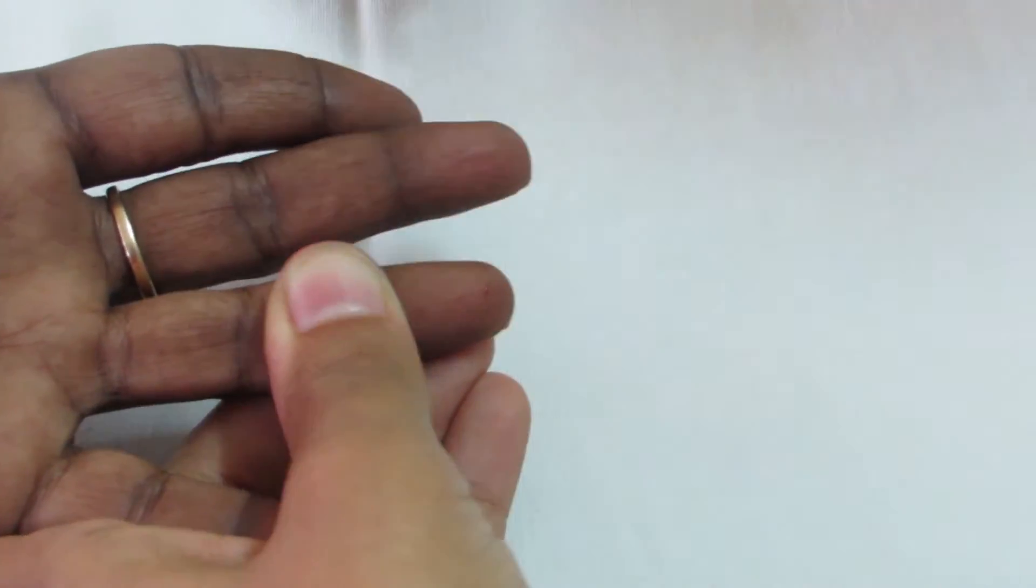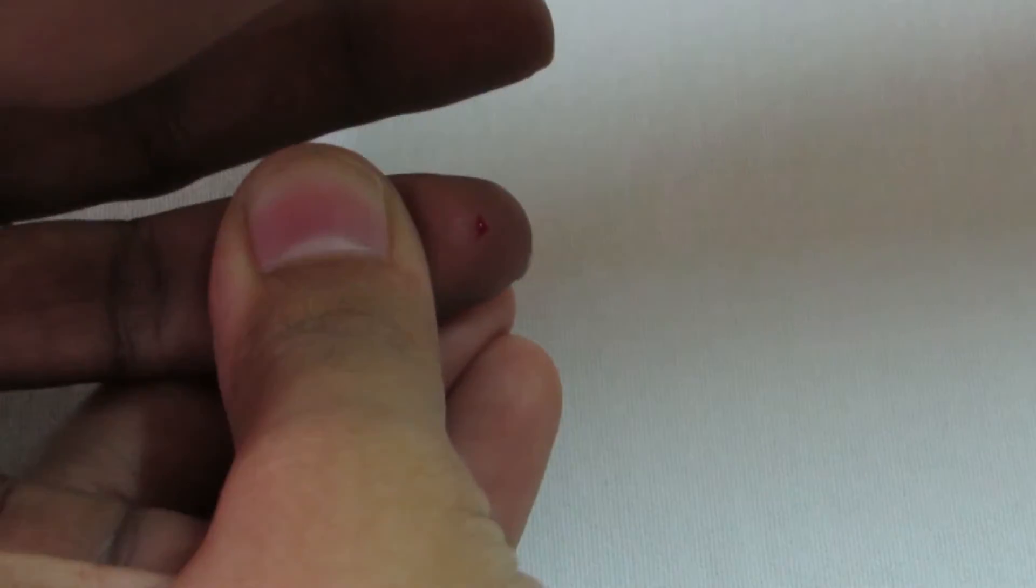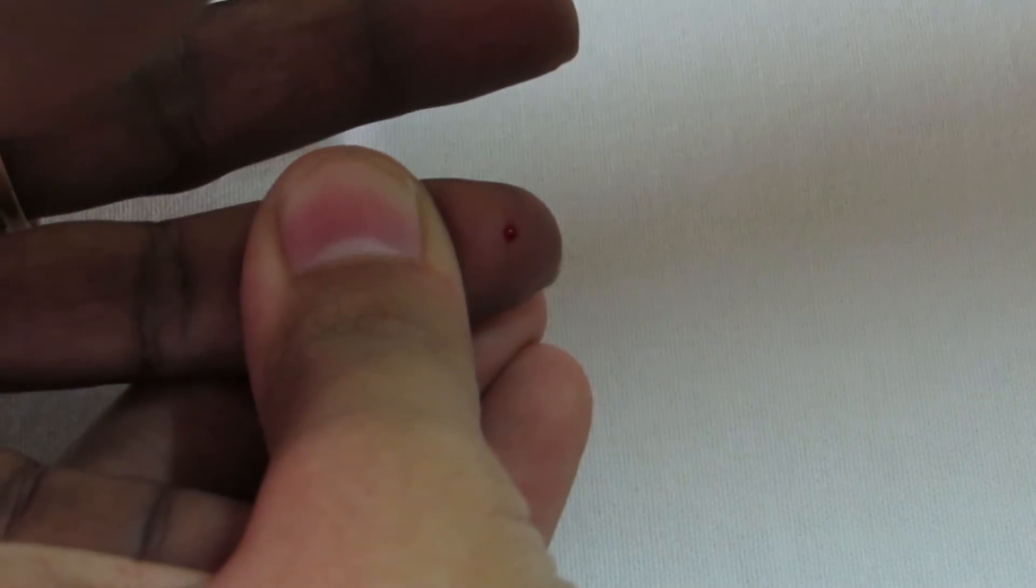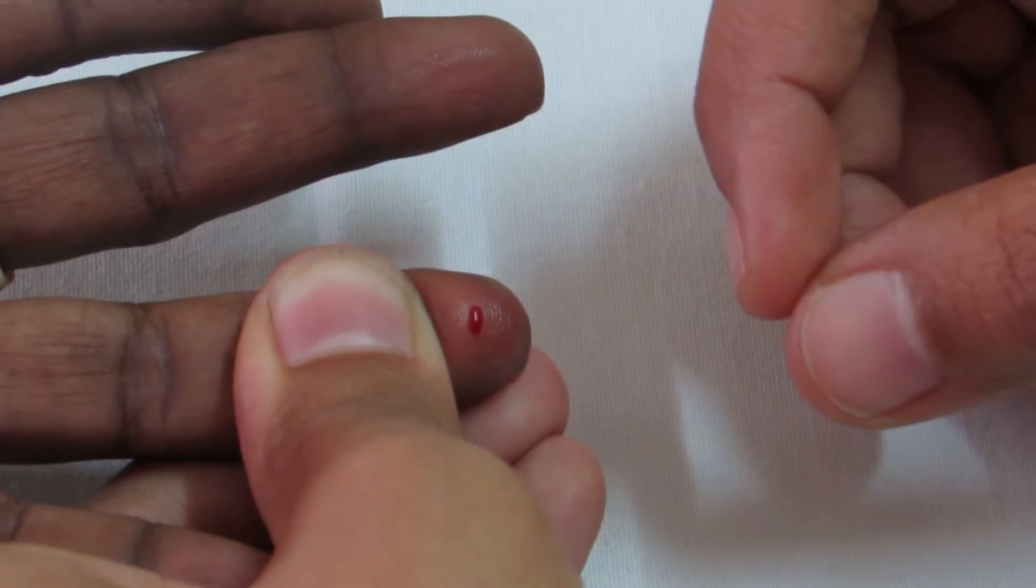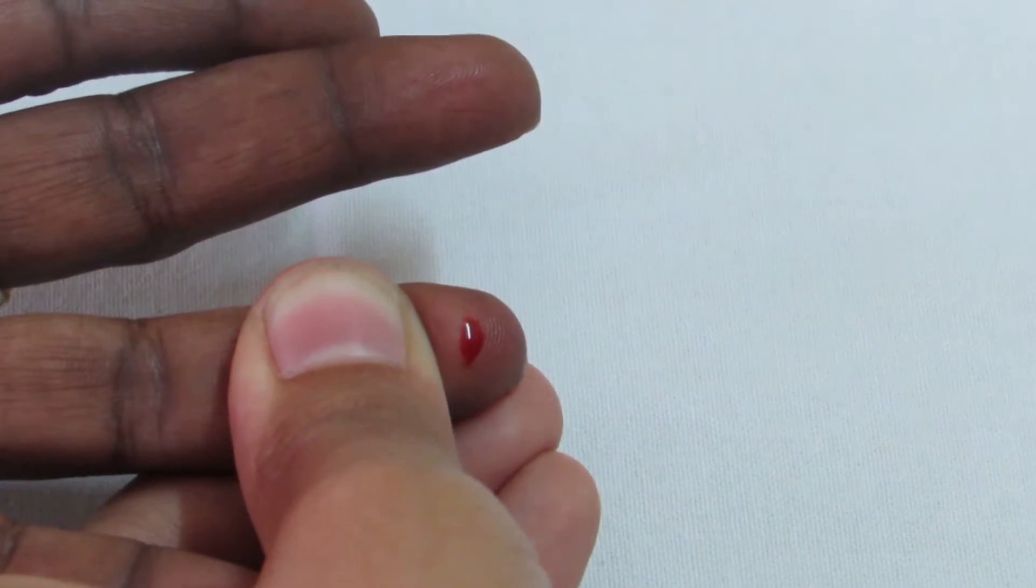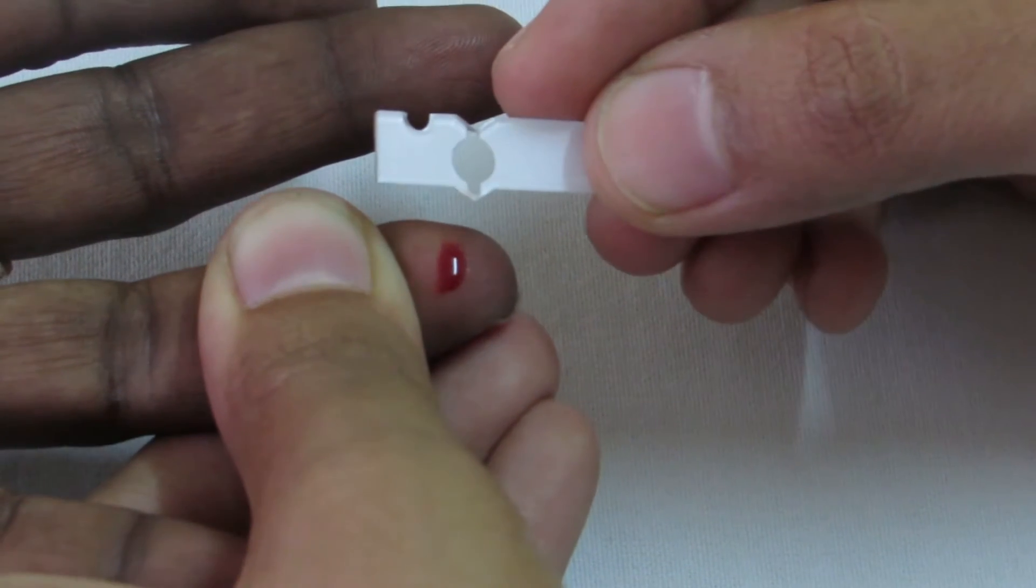Wipe the first drop of blood with the alcohol swab. Then with the second drop of blood, use the cuvette and let it draw the blood. Make sure that the cuvette is full of blood before you stop as shown in the video.